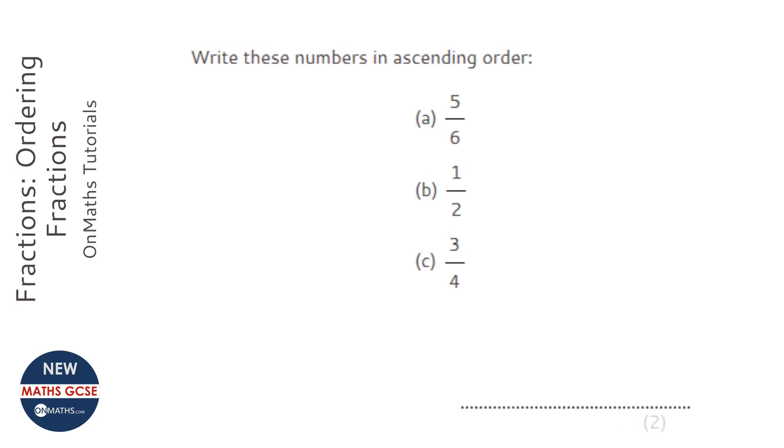We're asked to write these in ascending order. Ascending means going up, so we're going to start with the smallest and end with the largest. A plane ascends as it leaves the airport and descends as it comes in. I'm going to first look at the denominators of each of these.